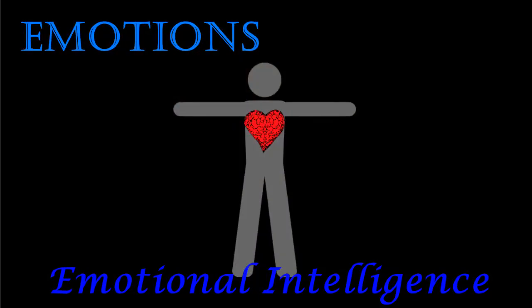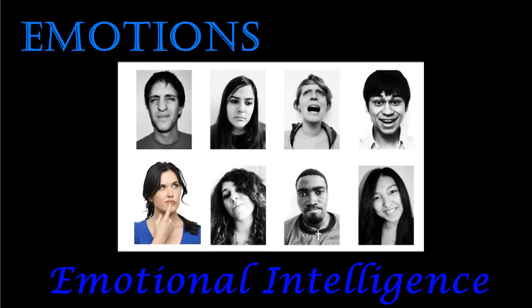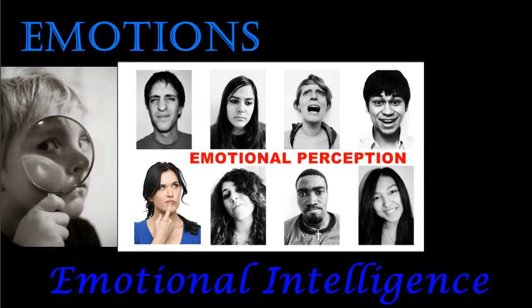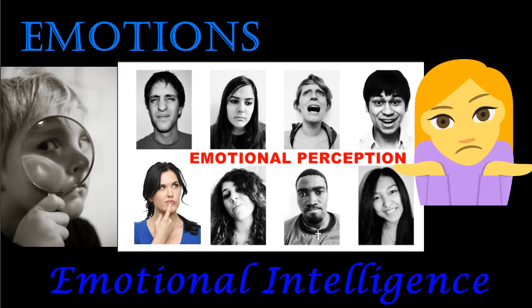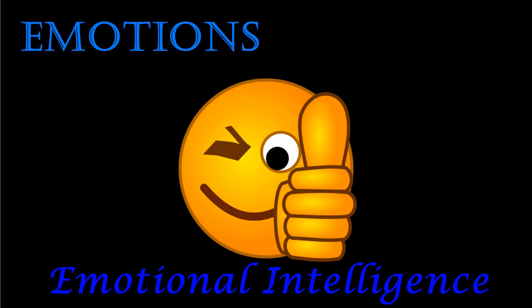In the last lesson, we introduced the concept of emotional intelligence. Part of emotional intelligence is the ability to recognize your own emotions and the emotions of others around you. This is known as emotional perception. Some people seem to be born with keen abilities of emotional perception, while others may struggle with this skill. Fortunately, emotional perception is something that can be improved with a little effort.